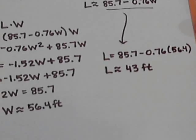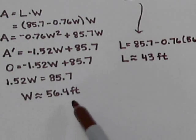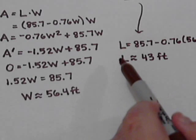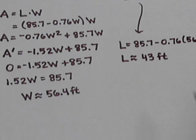So to maximize the area and stay within budget, they need to go 56.4 feet across and 43 feet down the sides.